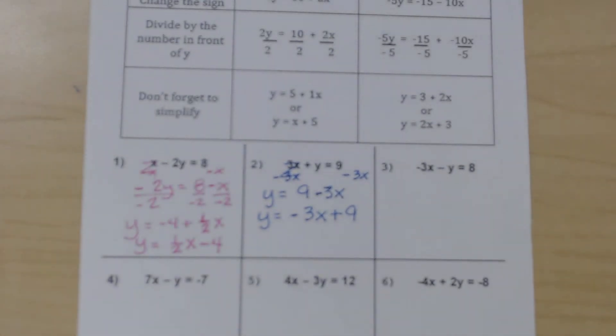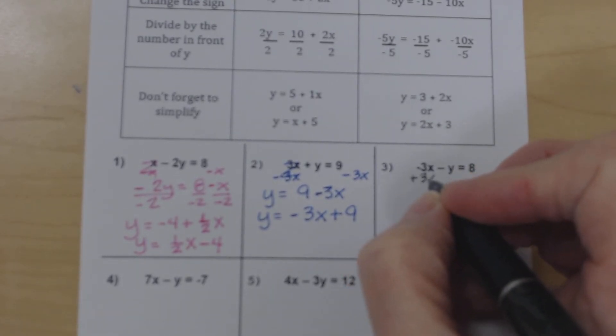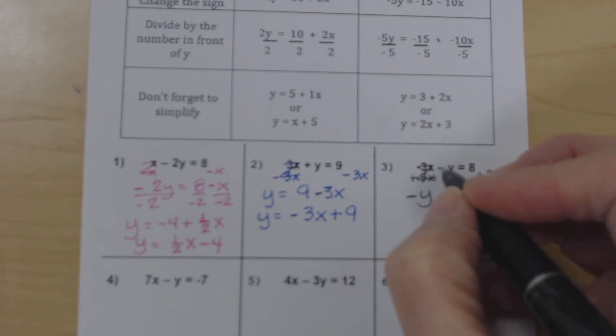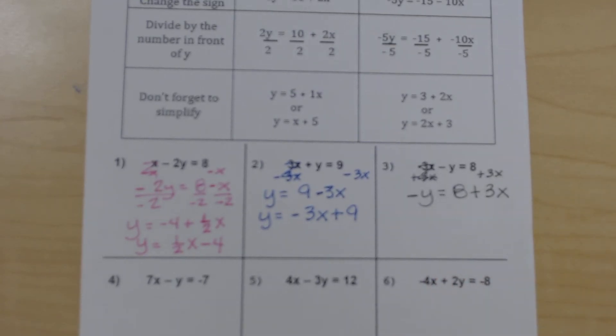Okay, and then our final example, this one has a negative 3x. So we're going to move this and move it to the other side by adding the 3x to both sides. Because that zeroes this out, so we end up with a negative y because there's that negative sign, it has to go with that y. Okay, 8 plus 3x on the right-hand side.